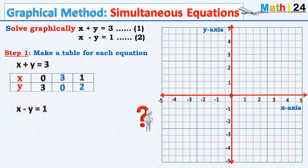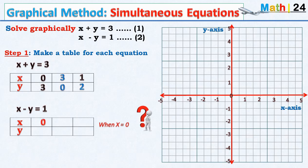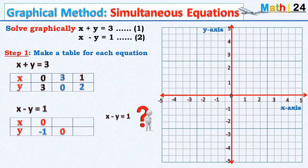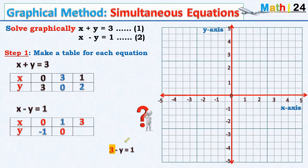We now make a table of values for the second equation. When x equals zero, y will be equal to minus one. If y equals zero, x will be equal to one. And if x equals three, we will have three minus y giving us one, therefore y must have a value of two.